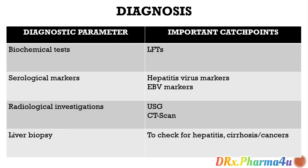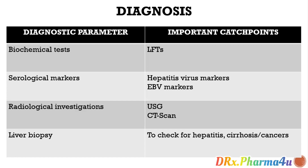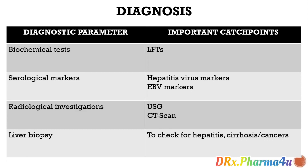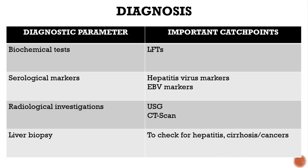Then we can look into serological markers — for example, hepatitis virus markers, Epstein-Barr virus markers. These can indicate whether the patient has a viral infection and drug-induced hepatotoxicity exacerbated the liver damage. For instance, hepatocellular carcinoma does not happen directly due to a medication; it only happens when a hepatotoxic medicine is used in a patient already infected with hepatitis B or hepatitis C virus. So serological markers help us understand the role of viral infection in this condition.